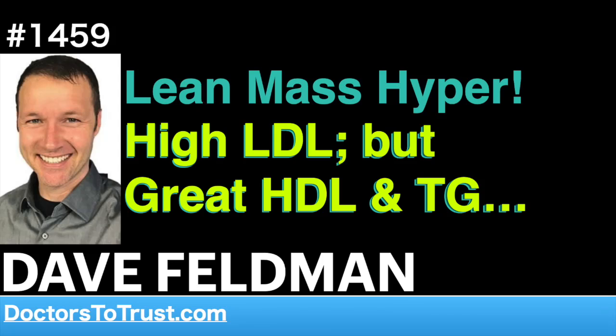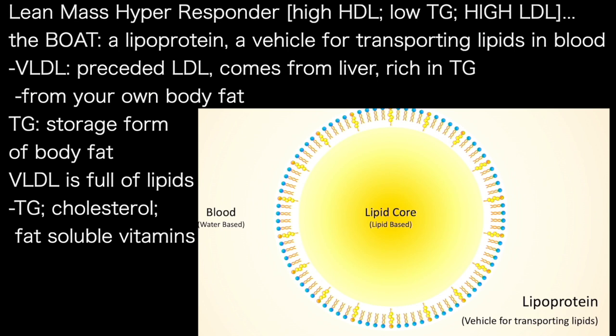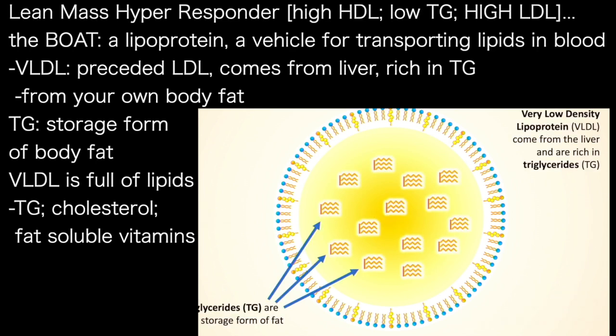What might explain the lean mass hyper-responder triad? This is the one section where I'm going to talk a tiny bit of biochemistry, but I'm going to keep it laser-focused on those key elements. This is, of course, the boat — what's known as a lipoprotein — and it's a vehicle for transporting lipids in the blood. In particular, we're interested in very low-density lipoproteins, VLDL.